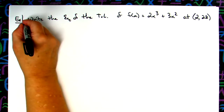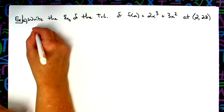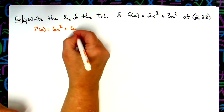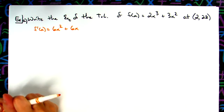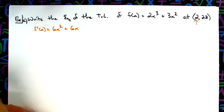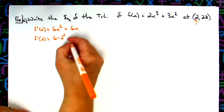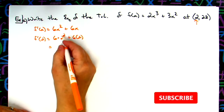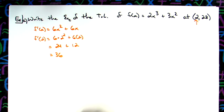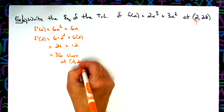First thing we do is take the derivative. So f′(x) = 6x² + 6x — that is the slope at any point along the curve. I want it at x = 2, so I plug in: f′(2) = 6 times 2² plus 6 times 2 = 24 + 12 = 36. So the slope at the point (2, 28) is 36.